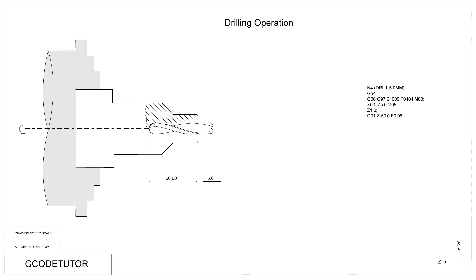Now it's time to start cutting metal. Using the G01 command — our feed rate command — we bring the tool in to Z-50mm, the depth of the hole. We declare the feed rate using an F value; in this case it's 0.08mm per revolution of the spindle.